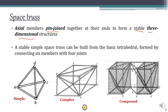The simplest form of a space truss is a tetrahedral, which has four joints and six members. So this is the simplest form of a space truss.